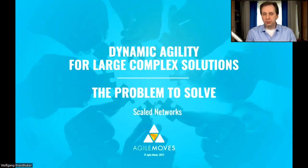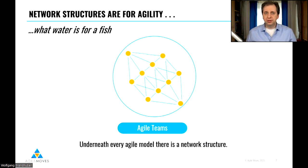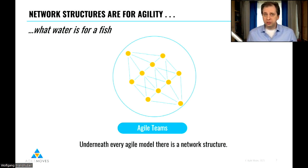What is the problem that we want to solve with dynamic agility for large complex solutions? Every agile approach has a network structure behind it, and I would say that this network structure is so essential — like water is for fishes. The agile method that you're choosing is essentially just the way to orchestrate the network structure, but if the network structure is not in place, you are probably not able to work in an agile mode.